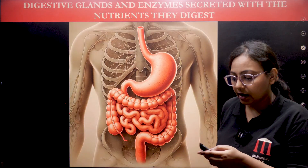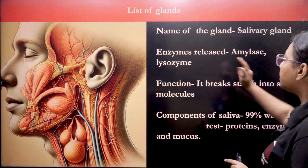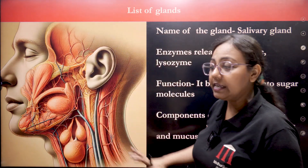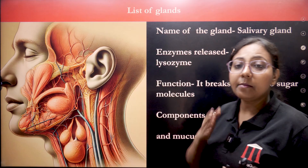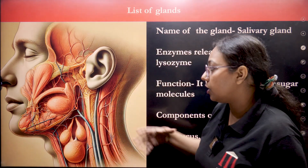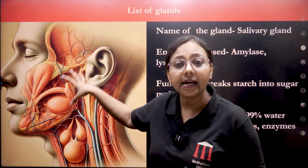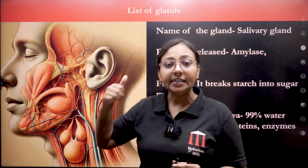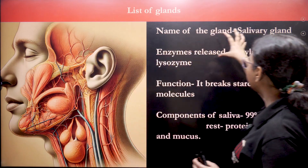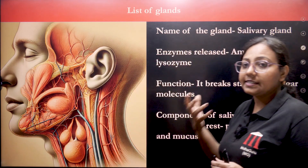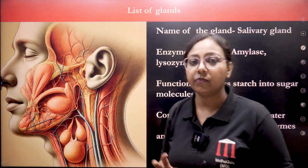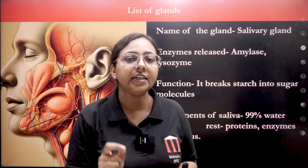Let's start with the salivary glands. As you can see in the picture, the salivary gland is situated in the area of your face, inside your buccal cavity. In our buccal cavity, teeth, tongue, and salivary glands are the major parts. Since it is the salivary gland, the enzyme is mixed in your saliva.